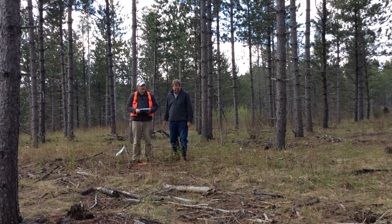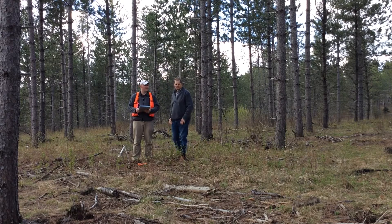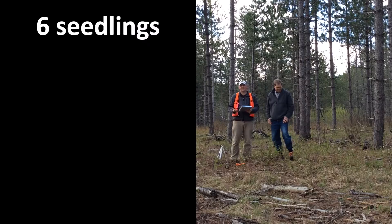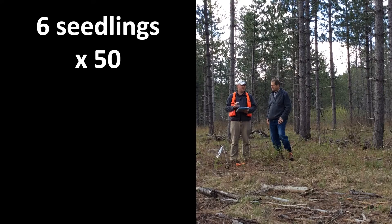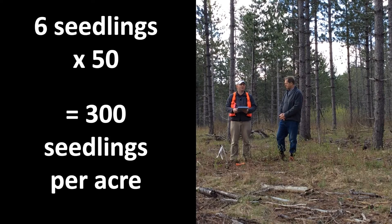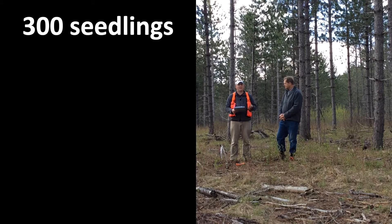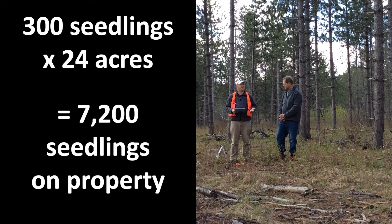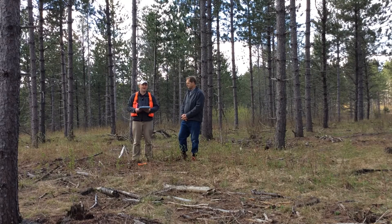Mike and I just counted the seedlings we found in our 1/50th of an acre inventory plot — we counted six seedlings. Multiplying six by 50, since each seedling represents 50 seedlings on a per-acre basis, we get 300 seedlings per acre. Knowing our property is 24 acres, multiplying 300 by 24 gives us 7,200 seedlings on our property — most of which look like red pine, with some jack pine scattered through as well.